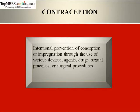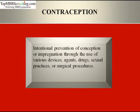For making contraception acceptable, motivation is important and it is provided through mass media, books on population education, lectures, school and college curriculum, and personal contact by family welfare and community health workers. It is the prevention of the fusion of gametes during or after sexual activity. The term contraception is a contraction of 'contra' meaning against, and 'conception' meaning fertilization. Contraception can occur both naturally and by artificial means in humans.